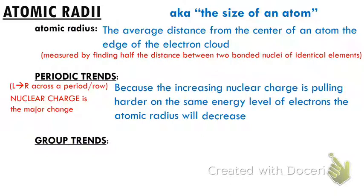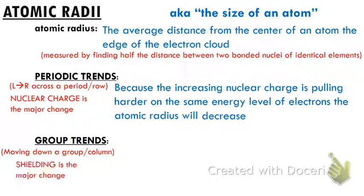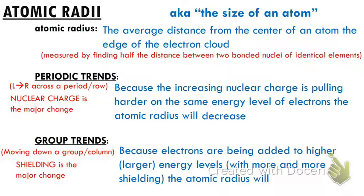In a group, as we're moving down, shielding is increasing — we're adding extra energy levels, and those energy levels are bigger and bigger. So our atom is going to be getting bigger and bigger, and that atomic radius is going to be increasing as we go down a column.